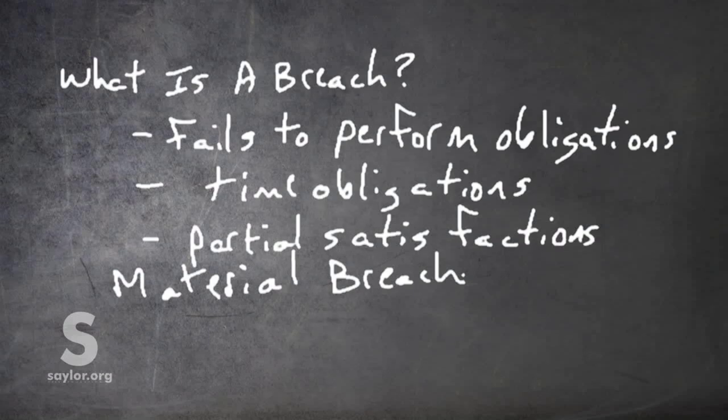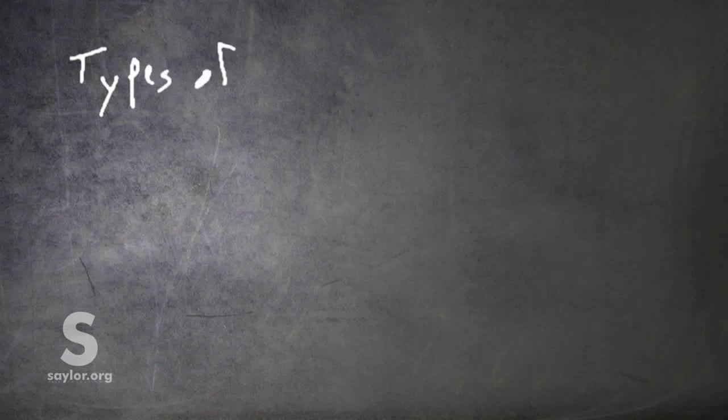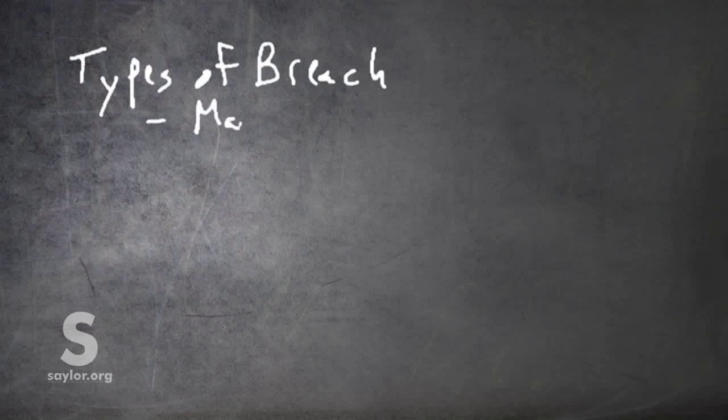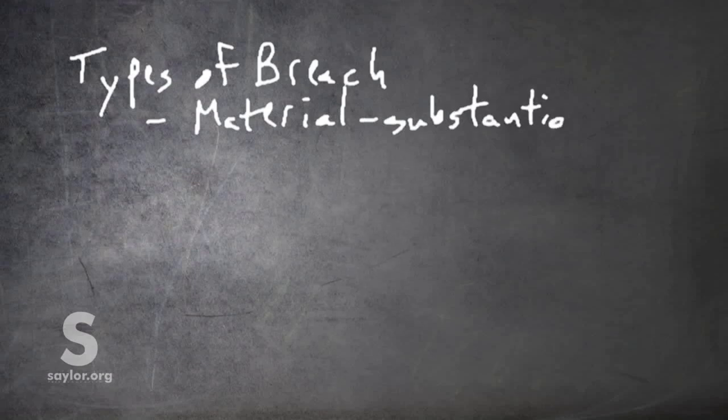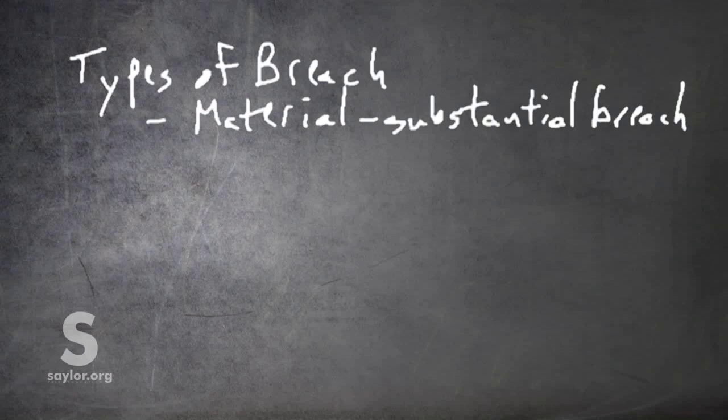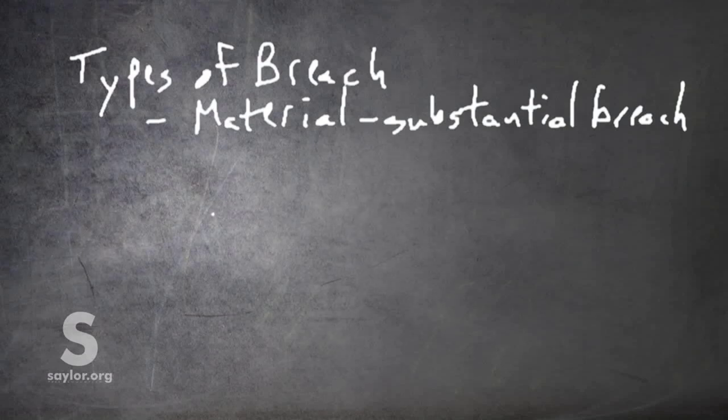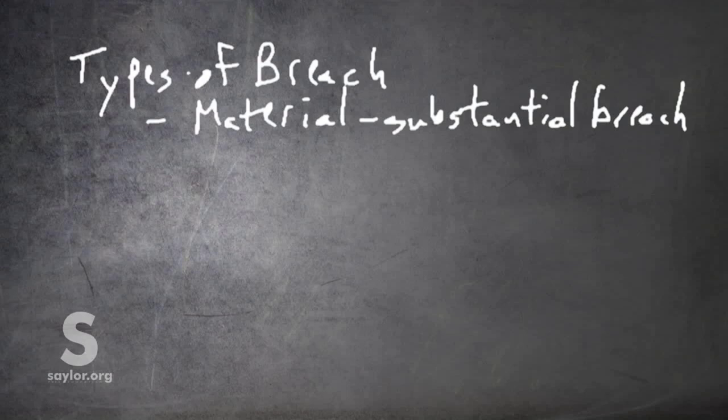Let's look at some specific types of breach. One we've already mentioned: Material breach. Material breach is a substantial breach, a substantial breaking of the contract. Keep in mind, parties to a contract often will not perform their obligations perfectly. So you have to determine whether a non-performance is material or not.